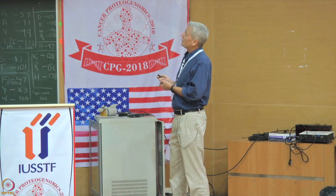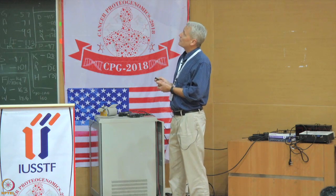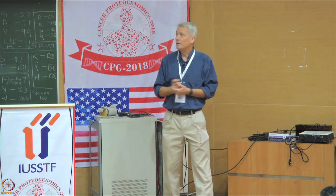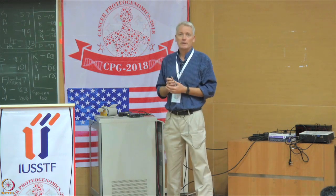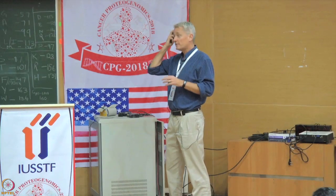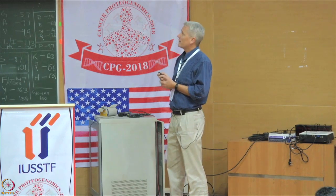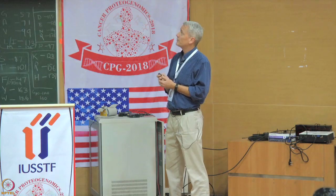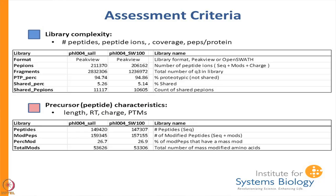I am going to go through these very briefly. I have two different libraries depicted here. This is the PHL — the pan human library — taken from many different experiments, all run on the AB SCIEX TripleTOF 5600. You can see there are some 211,000 peptide ions. A peptide ion is a primary sequence plus modification plus charge, and there are almost 3 million fragments.